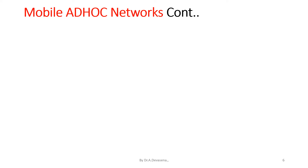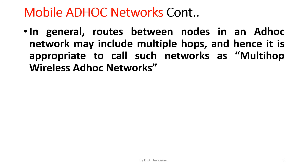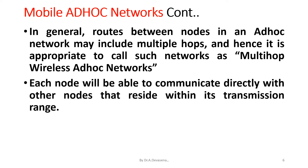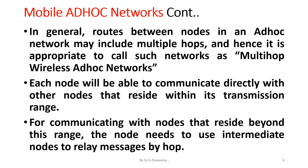In general, routes between nodes in an ad hoc network may include multiple hops, and hence it is appropriate to call such networks multi-hop wireless ad hoc networks. Each node will be able to communicate directly with other nodes that reside within its transmission range. For communicating with nodes beyond this range, the node needs to use intermediate nodes to relay messages hop by hop.